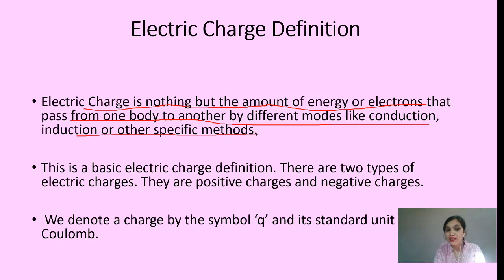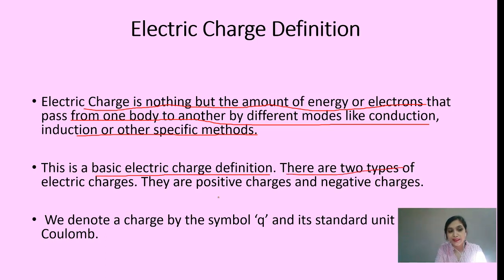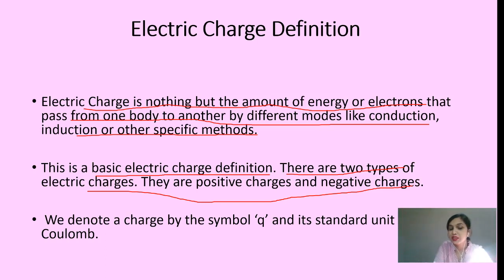You can see the details of charging methods in my previous video, where I have explained the methods of charging. This is the basic electric charge definition. We know there are two types of charges: positive charge and negative charge. The electron has a negative charge particle and the proton has a positive charge particle.